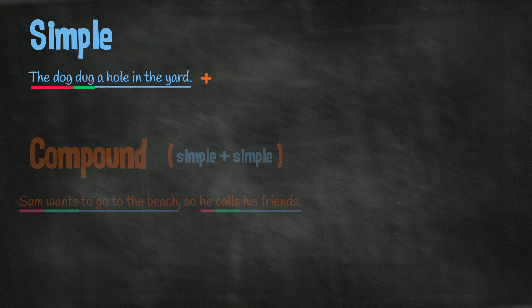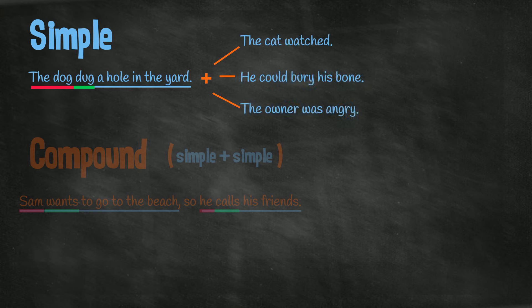We have to add another independent clause. Here are some independent clauses we could choose. The cat watched. He could bury his bone. The owner was angry.